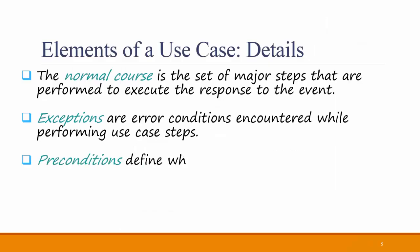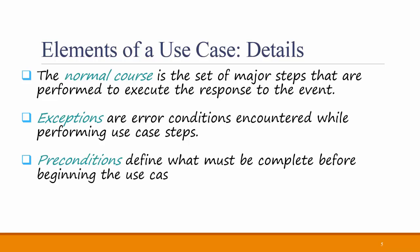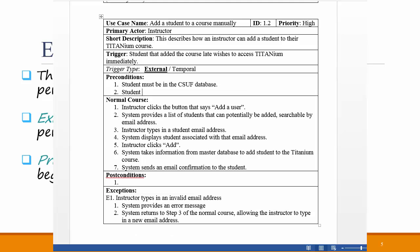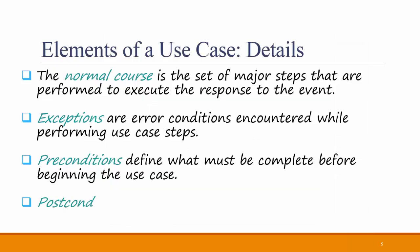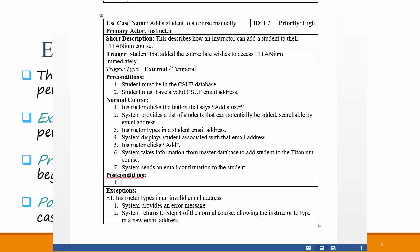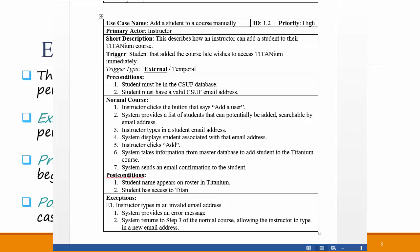Pre-conditions define what must be complete before beginning the use case. For example, the student must be in the CSUF system, the student must have a CSU email address, and so forth. The post-conditions define what is complete when the use case ends. For example, the student's name will appear on the roster in Titanium, the student will have access to Titanium materials, and so forth.